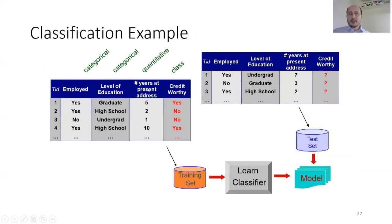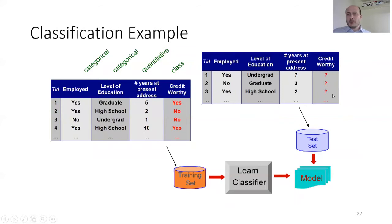We split our data into two parts: the training set on the left and the test set on the right. In the training set, we have the class outputs. In the test set, we do not know the outputs. After applying the training set and executing learning classifiers, we extract a model and apply the test set to find the output — for example, whether credit is worthy or not.